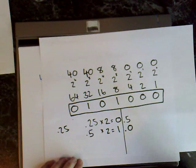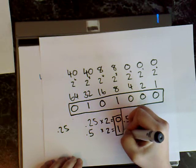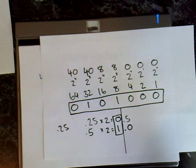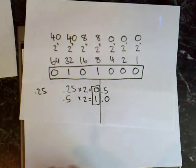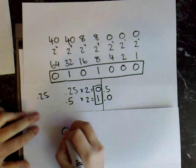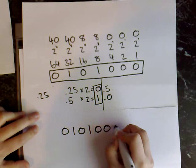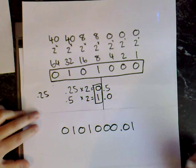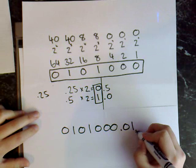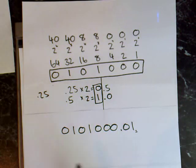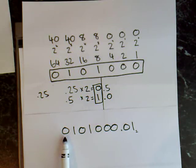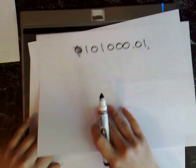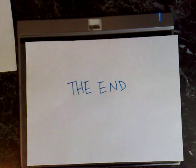Now that we have a 0 after the decimal point we know we can stop. This part here is your answer for the fractional part. When you write the final answer out, you write from top to bottom, so your answer will be 101000.01, and to show it's in binary form you write a subscript 2 at the bottom. You may notice there's a leading 0 at the front — you don't have to keep that, you can remove it, and your answer will be the same. That's all, thanks.